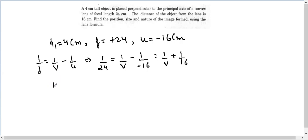That means 1/24 minus 1/16 is equal to 1/v. Taking the LCM to be 48, it is 2 minus 3, that is minus 1/48. That means v comes out to be minus 48 centimeter. So v is negative, that means the image is virtual.